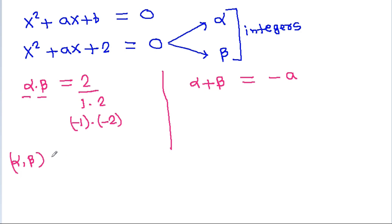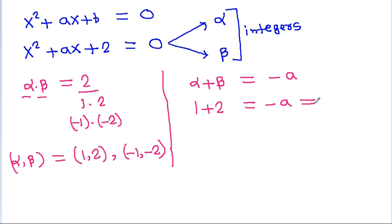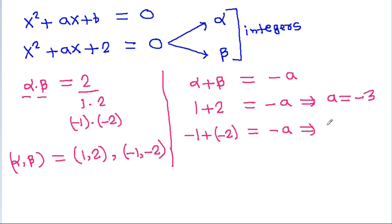So alpha and beta is either 1 and 2, or minus 1 and minus 2. If alpha and beta are 1 and 2, then 1 plus 2 equals minus a, and we get a equal to minus 3. And if alpha and beta are minus 1 and minus 2, then minus 1 plus minus 2 equals minus a, and we get a equal to 3.